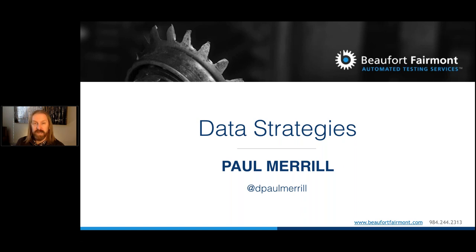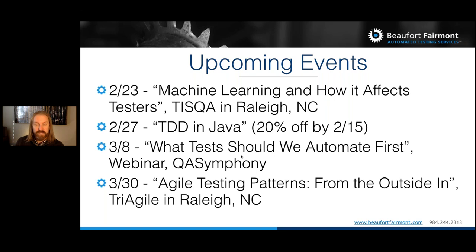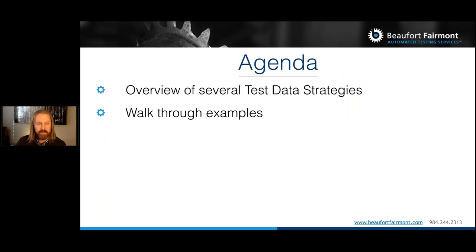You can find me on Twitter at dpaulmerrill. A few upcoming events: today is February 13th, 2017. I'll be in Raleigh at TSCA talking about machine learning and how it affects testers on the 23rd. On the 27th I'll be starting a course called Test Driven Development in Java, 20% off if you register by the 15th. On the 8th I'll be doing a webinar for QA Symphony called 'What Tests Should We Automate First?' On the 30th I'll be at TriAgile in Raleigh talking about agile testing patterns from the outside in. In April I'll be at Quality Jam in Atlanta.